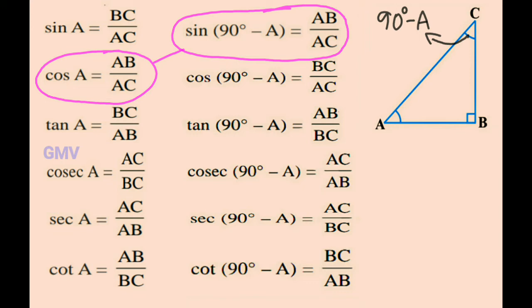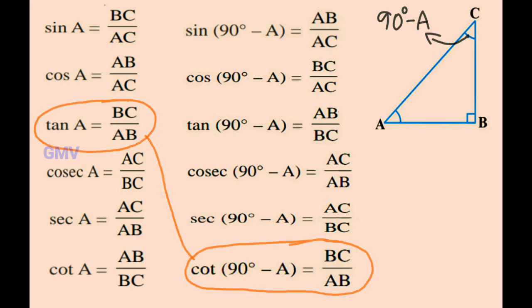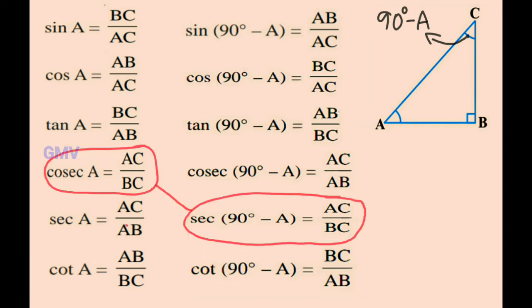The trigonometric ratios of tan A and cot(90° − A) are equal — that is BC by AB. Hence tan A is equal to cot(90° − A). The trigonometric ratios of cosec A and sec(90° − A) are equal — that is AC by BC. Hence cosec A is equal to sec(90° − A).